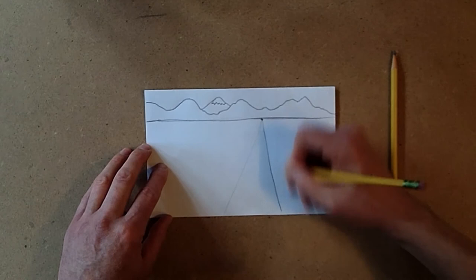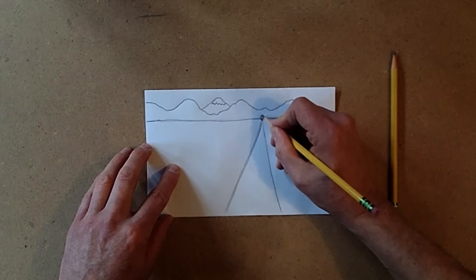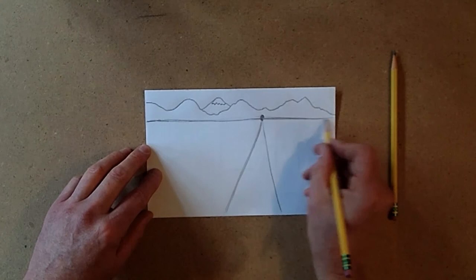Put your road in there. So remember, you want to widen it as you come closer to the bottom of the paper. Maybe a little tunnel at the end right there.